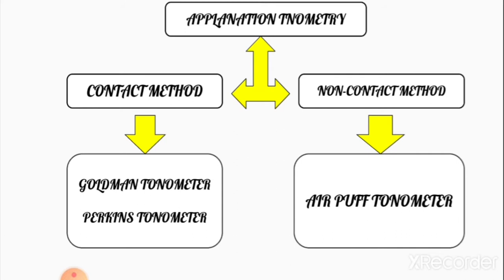Applanation tonometry has two types: contact method and non-contact method. Under the contact method, we have the Goldmann tonometer — used with a slit lamp — and the Perkins tonometer, which is a handheld tonometer you can carry anywhere. For example, during an outreach camp where a slit lamp is unavailable, the Perkins tonometer is ideal.